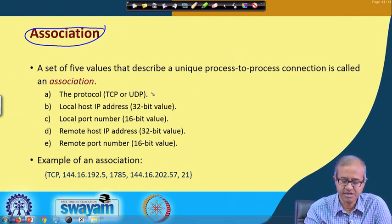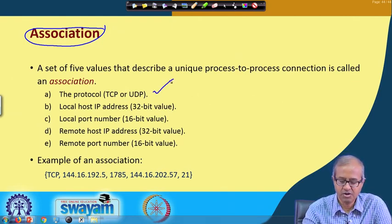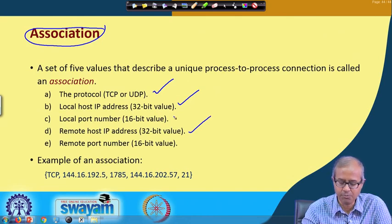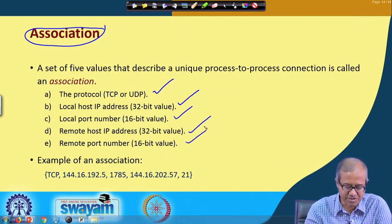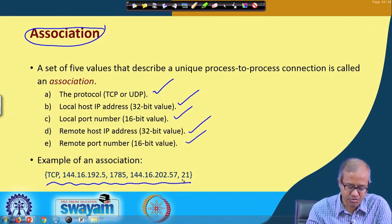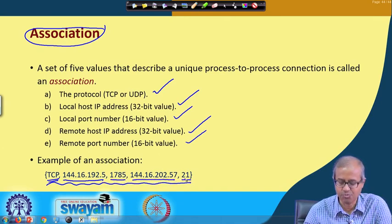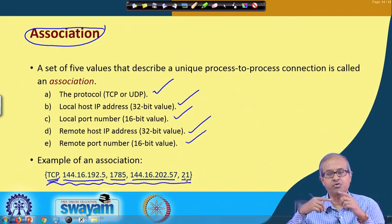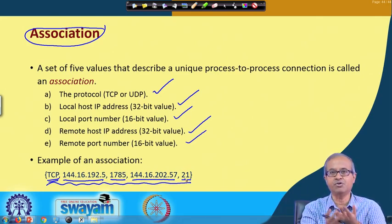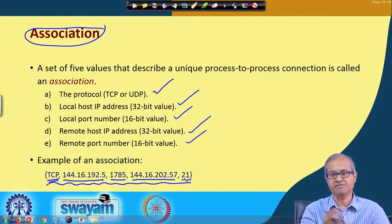The information needed to establish a connection is sometimes referred to as an association. These five values define an association: the protocol being used, the local IP address, the remote IP address, the local port number (which can be an ephemeral port number), and the remote port number. For example, an association could specify protocol TCP/IP, local IP address, local port number, remote IP address, and remote port number. Whenever you do any kind of communication over the internet, this kind of association gets created automatically in the underlying networking software.